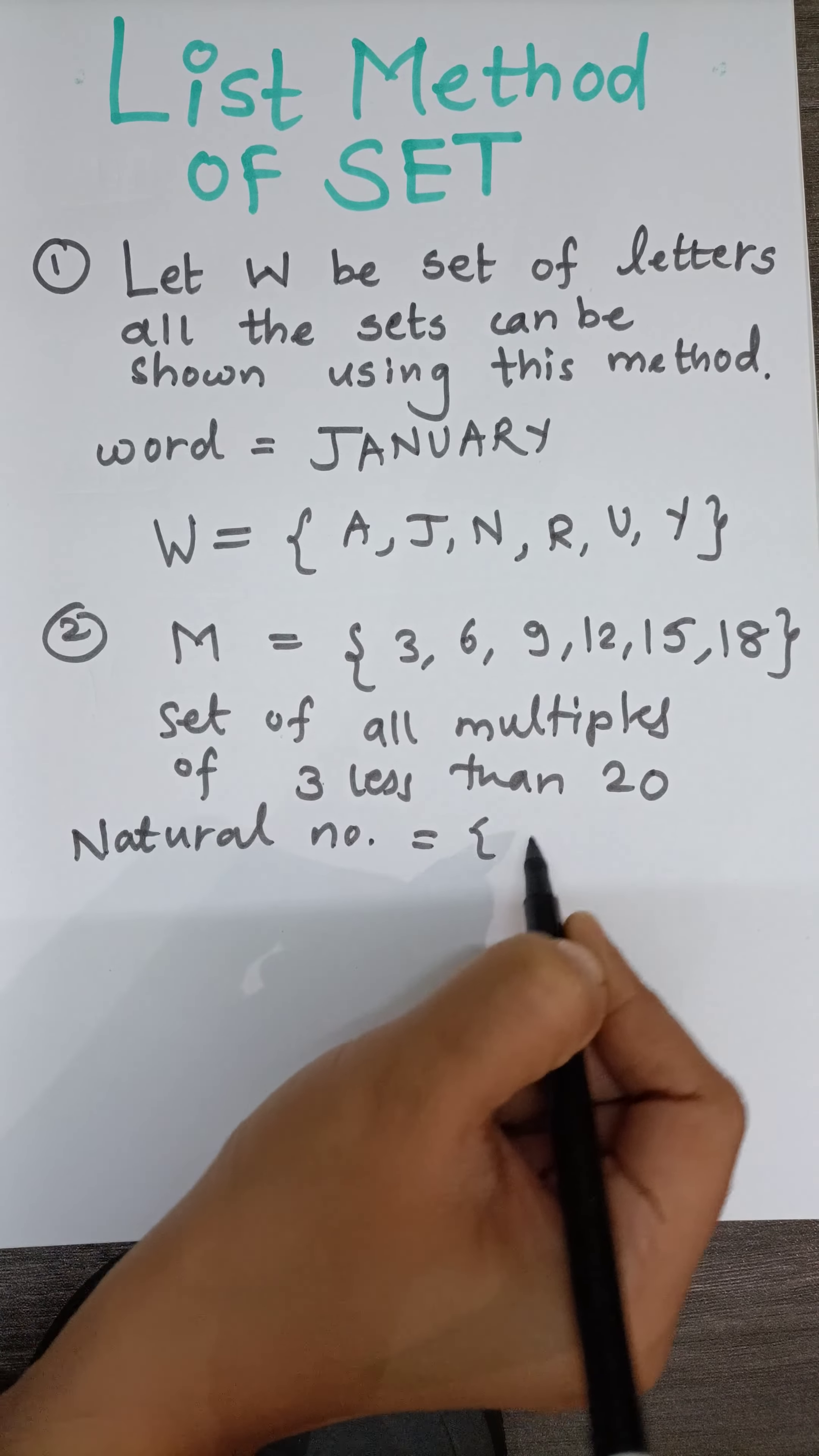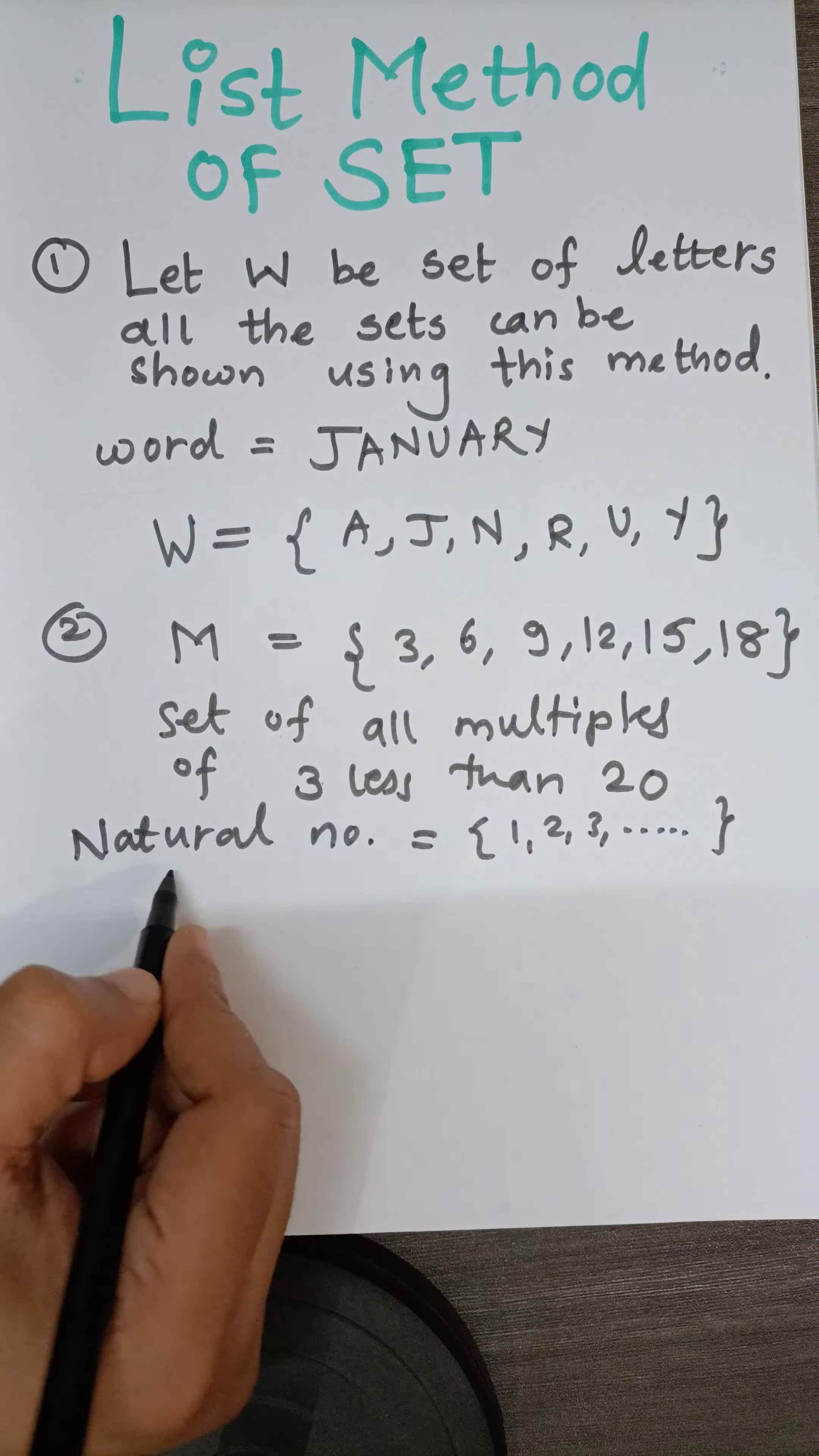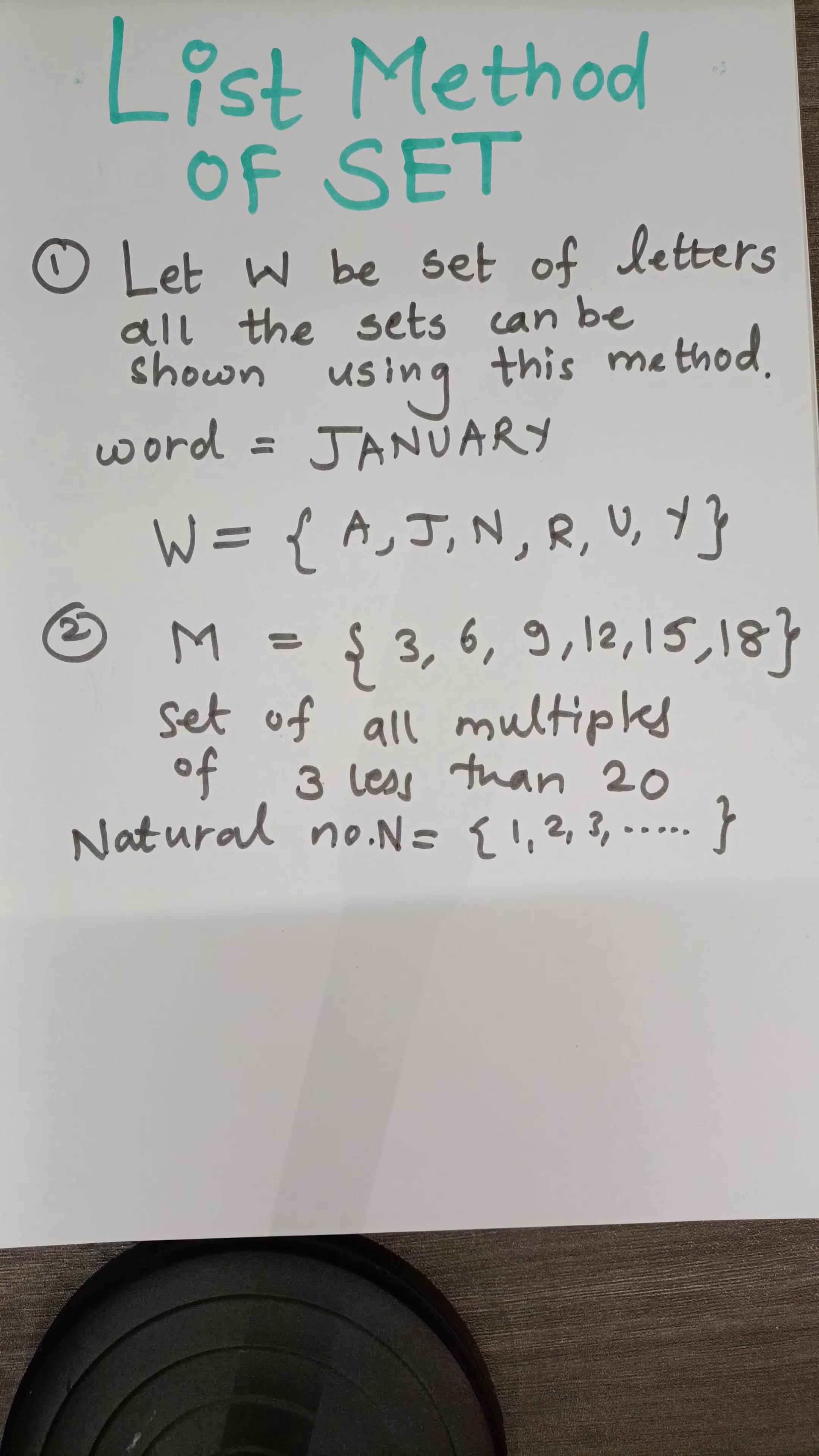A set which is infinite contains only counting numbers. We can represent it by using capital letter N. 1, 2, 3, infinite numbers are there in a set.